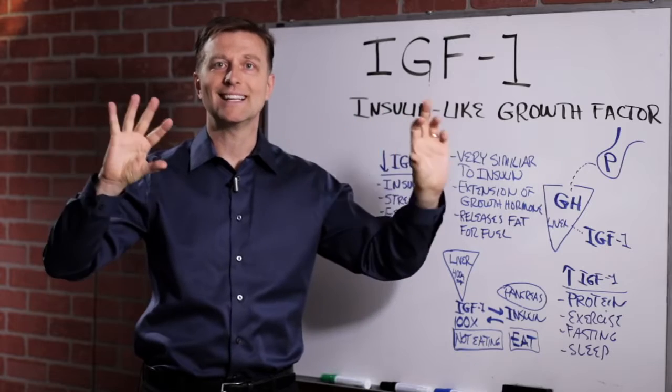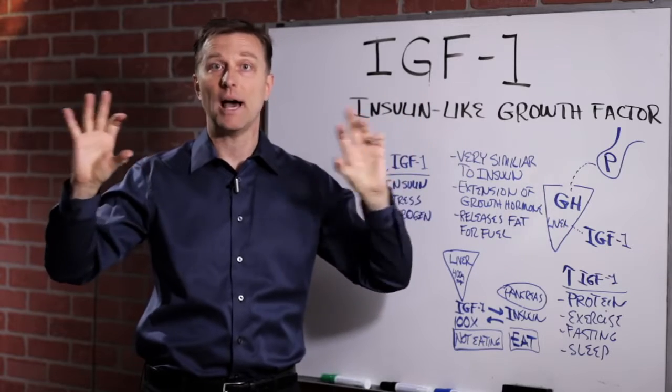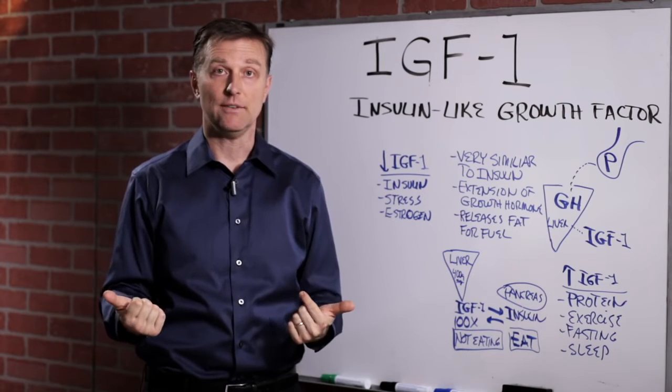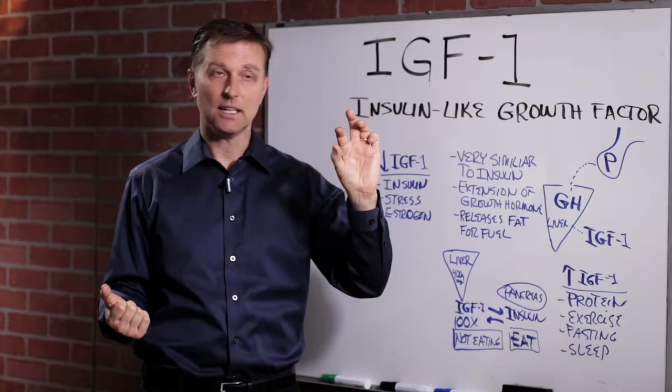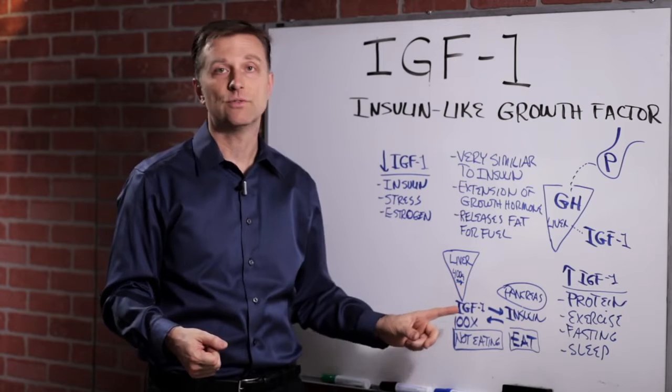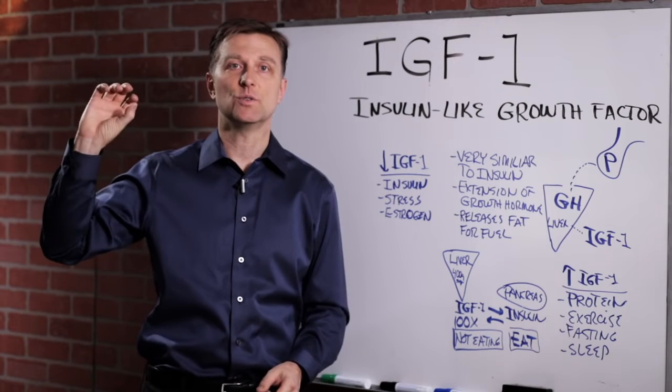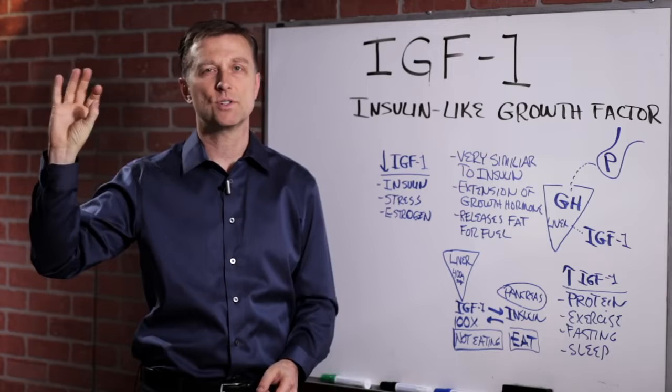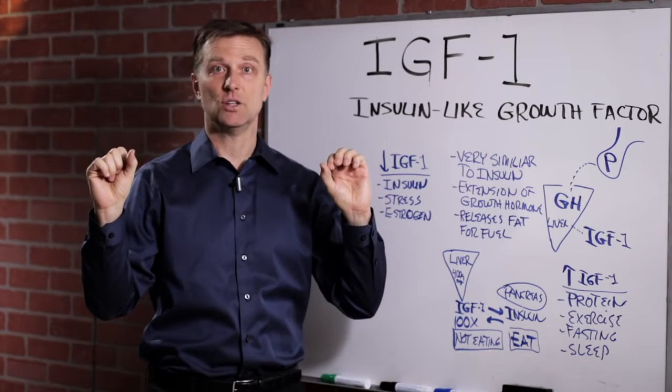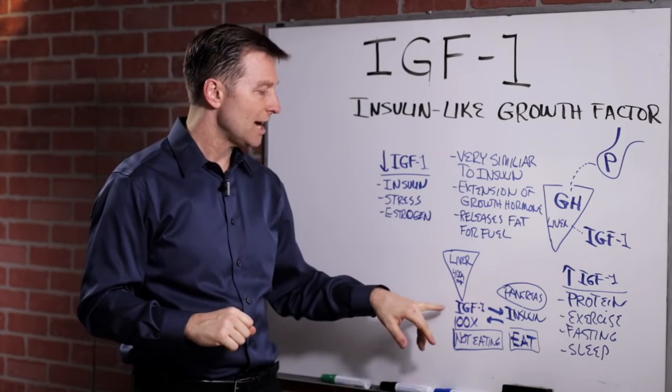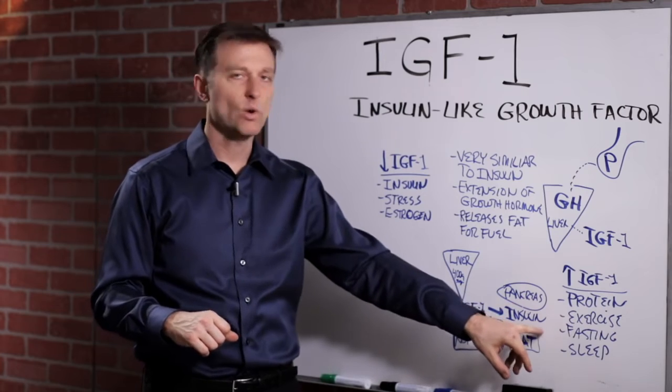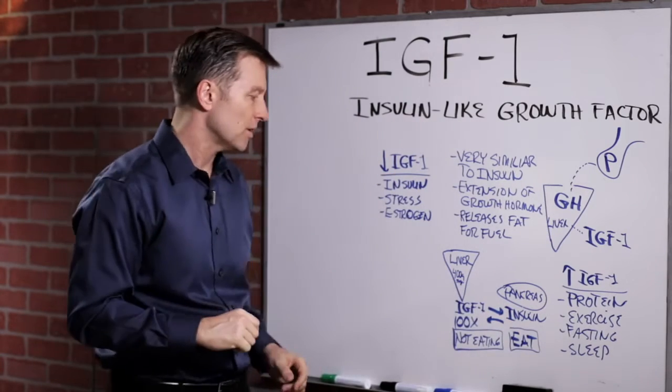These two hormones work together back and forth to determine what fuel you're going to use. If insulin is kicked in when you're eating, you're going to use sugar fuel. When you don't eat, when you fast, you're going to use fat fuel. You're going to use some stored sugar, but mainly fat fuel. So we have this determination of if you want to burn sugar or fat. IGF works when you're not eating, and insulin works when you're eating.